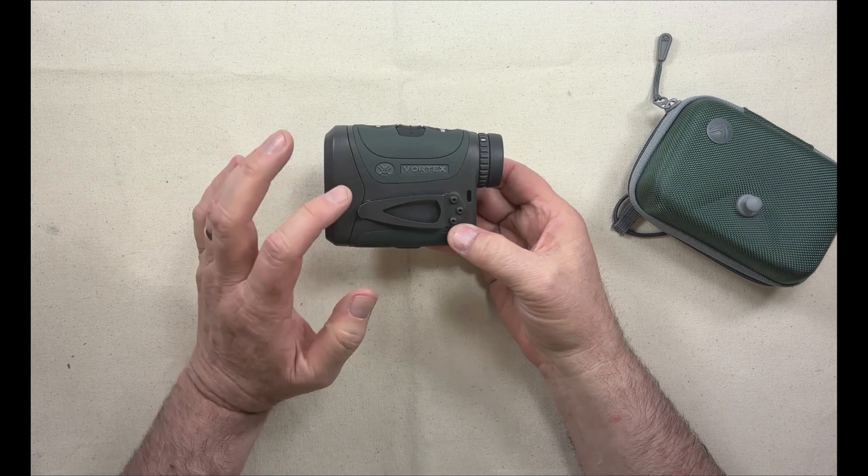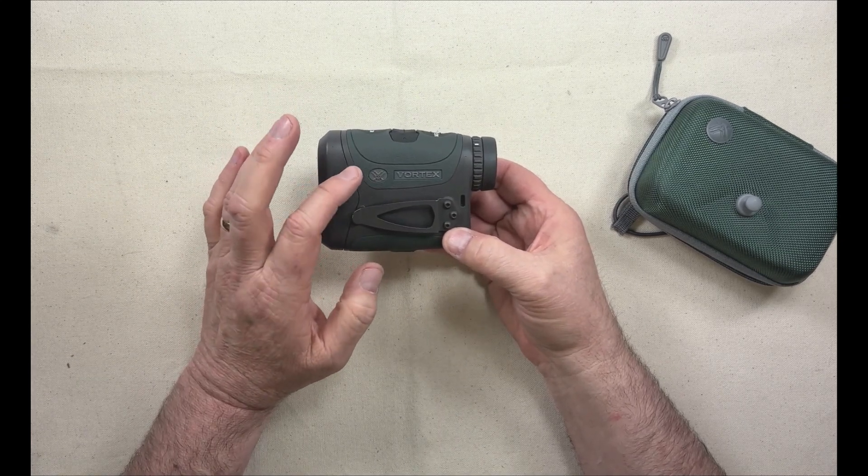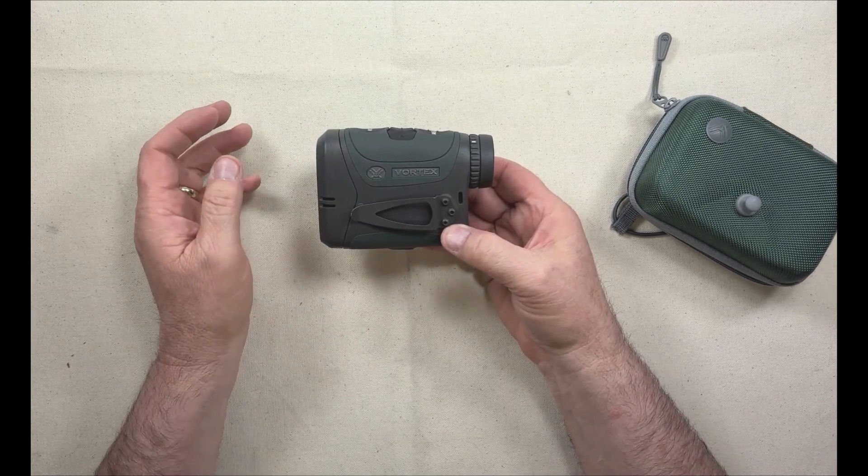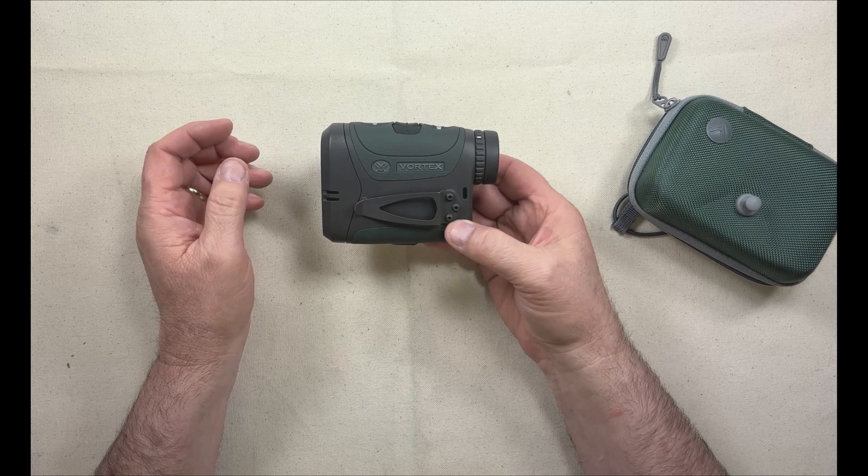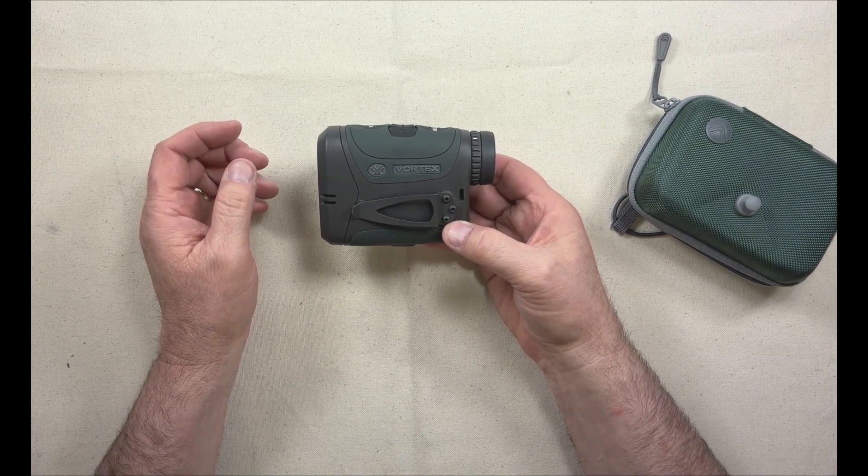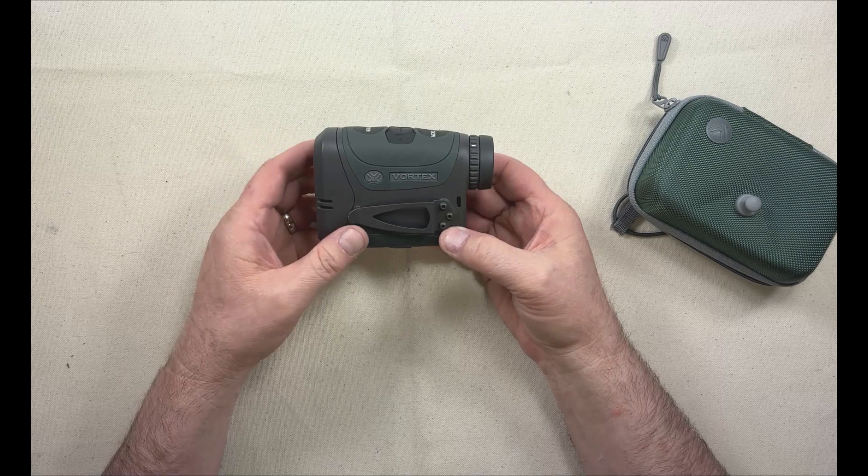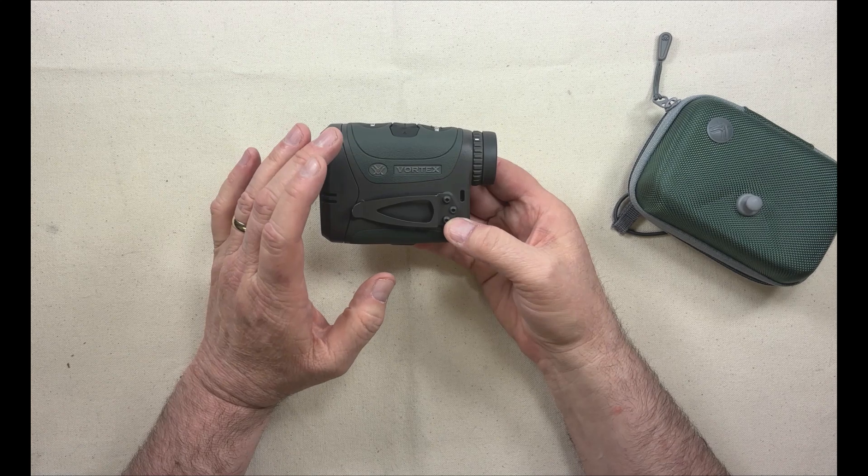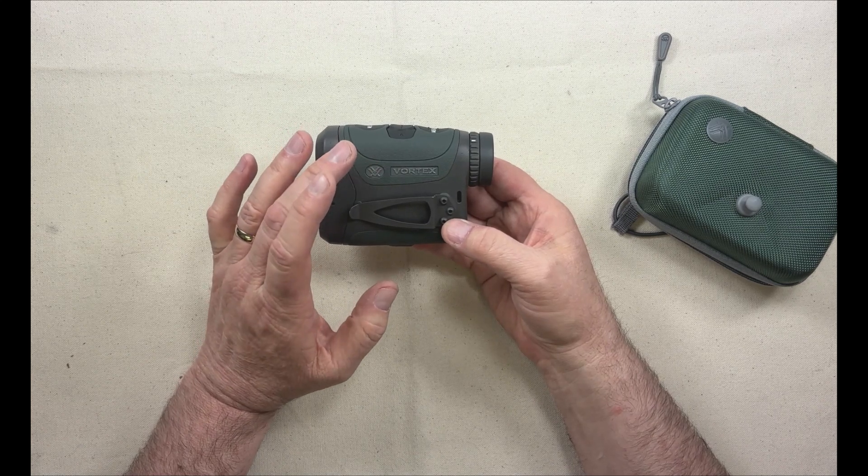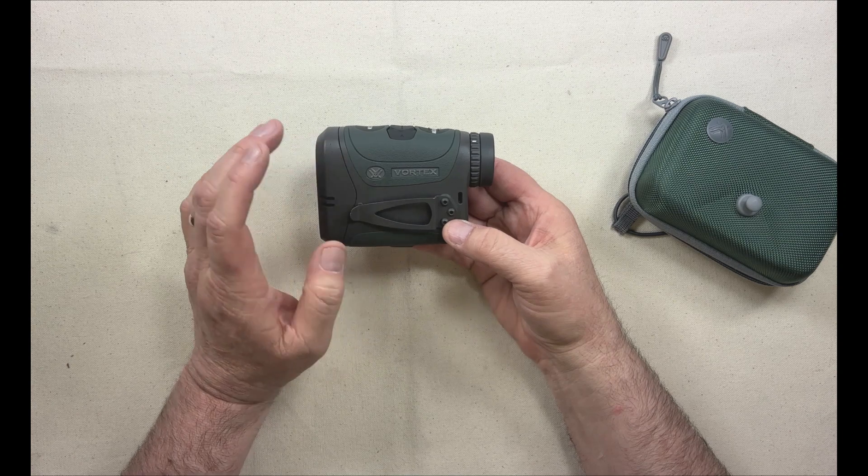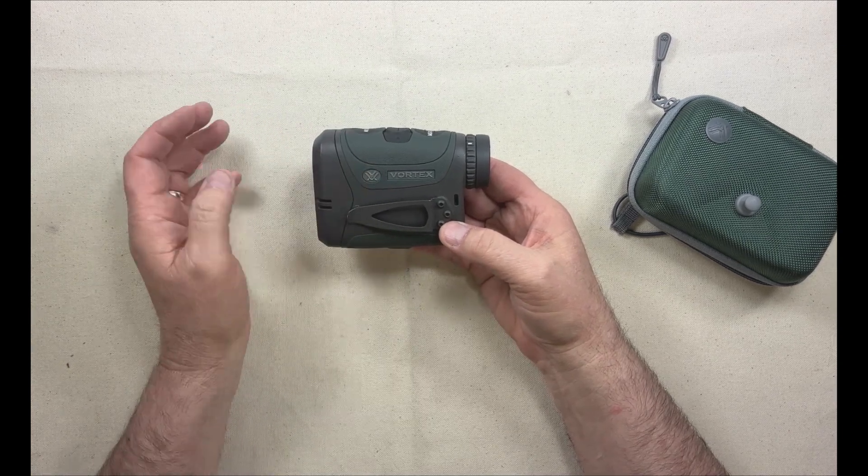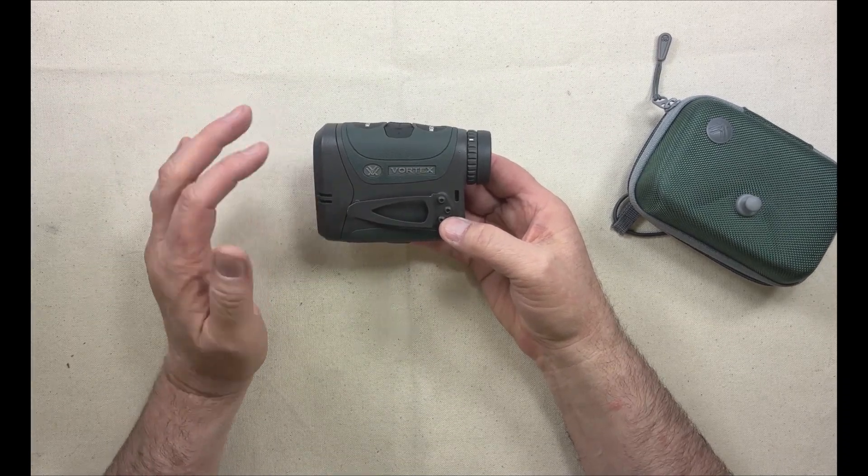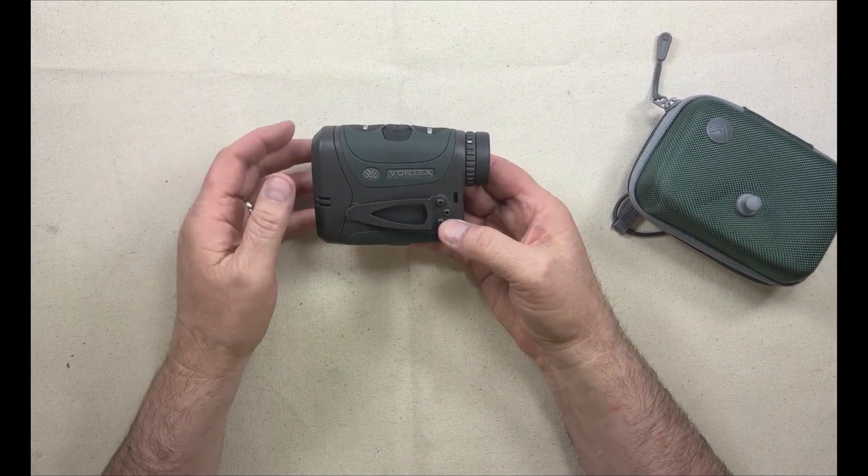For starters, Vortex offers two versions of the HD 4000 rangefinder. They have this version, which is the GB version, and then they have the standard Razor HD 4000 version. The standard version does not have the onboard geoballistics application integrated into it, and that makes a big difference.